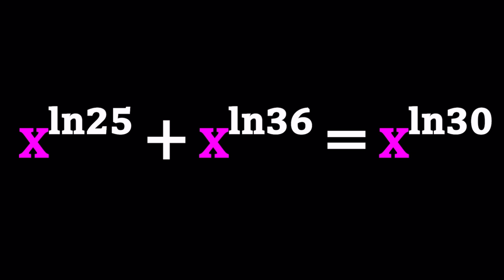What kind of equation are we dealing with? I'd like to say it's a polynomial, but it's not because the powers are not non-negative integers. We have x to the power ln 25 plus x to the power ln 36 equals x to the power ln 30.